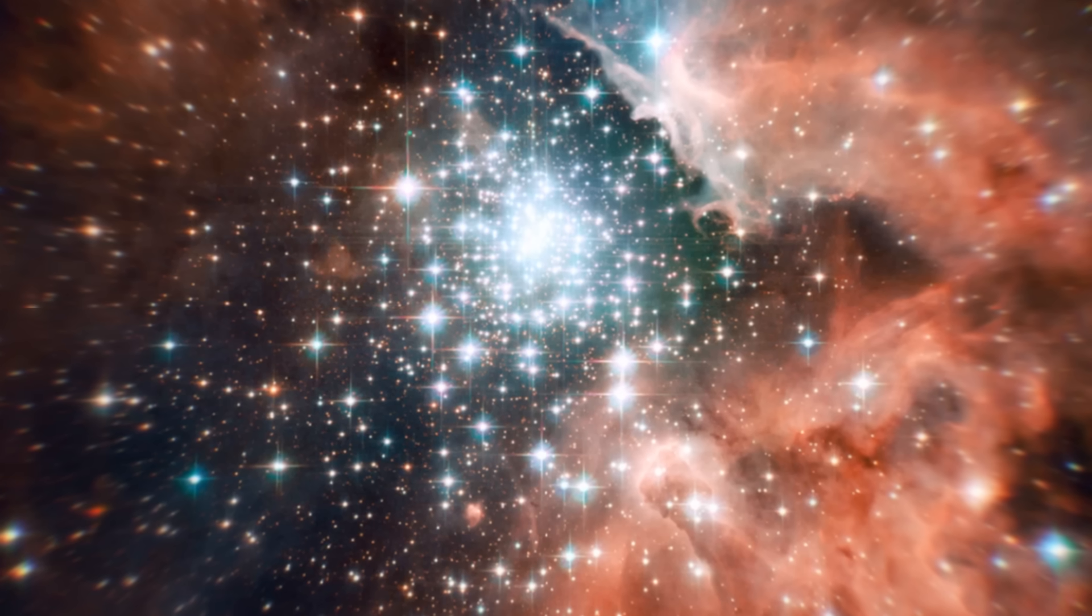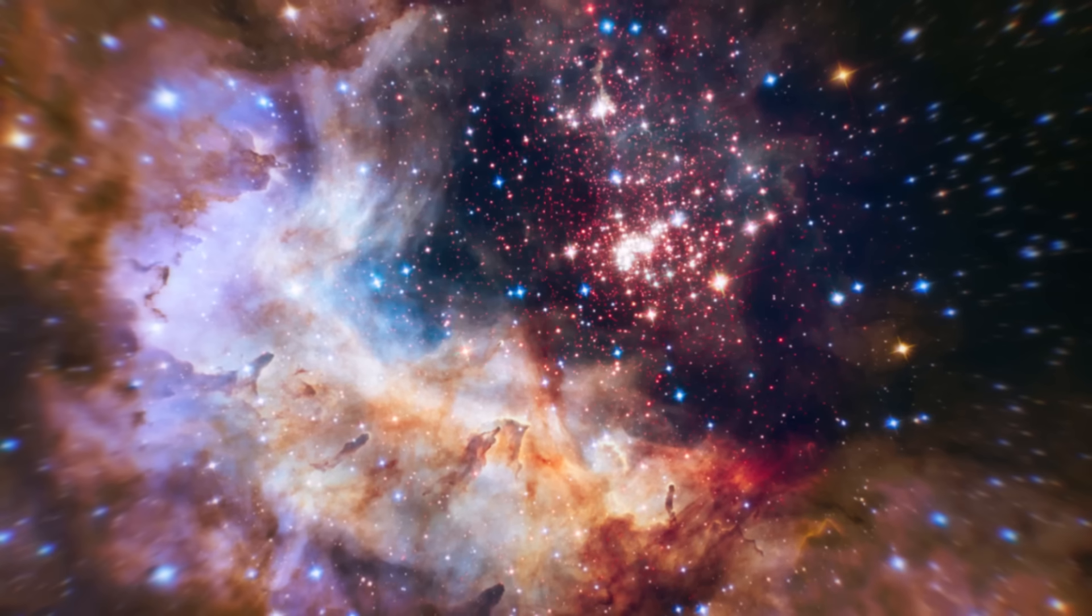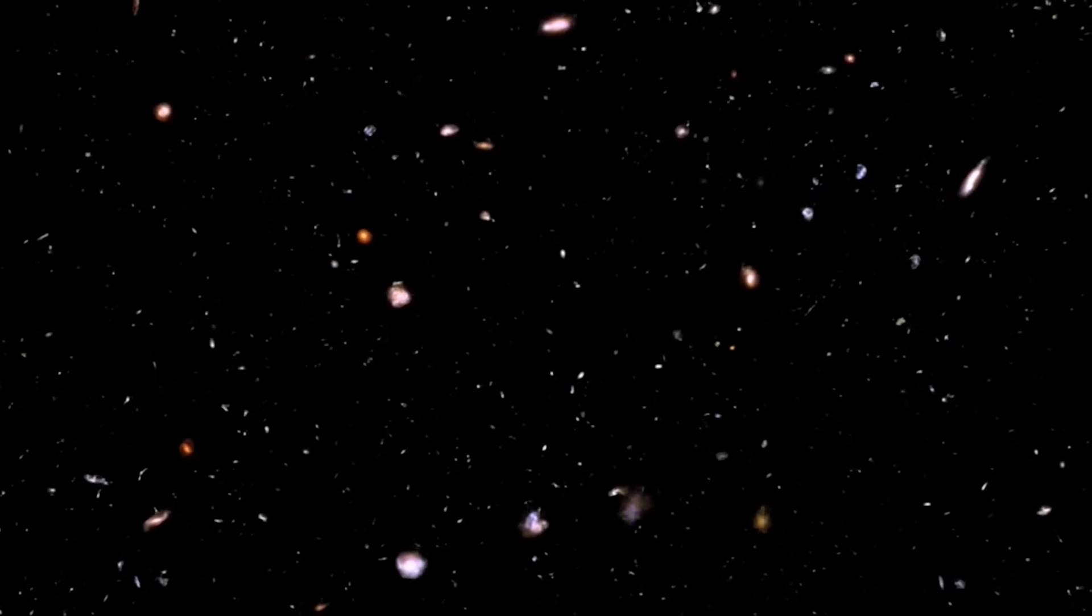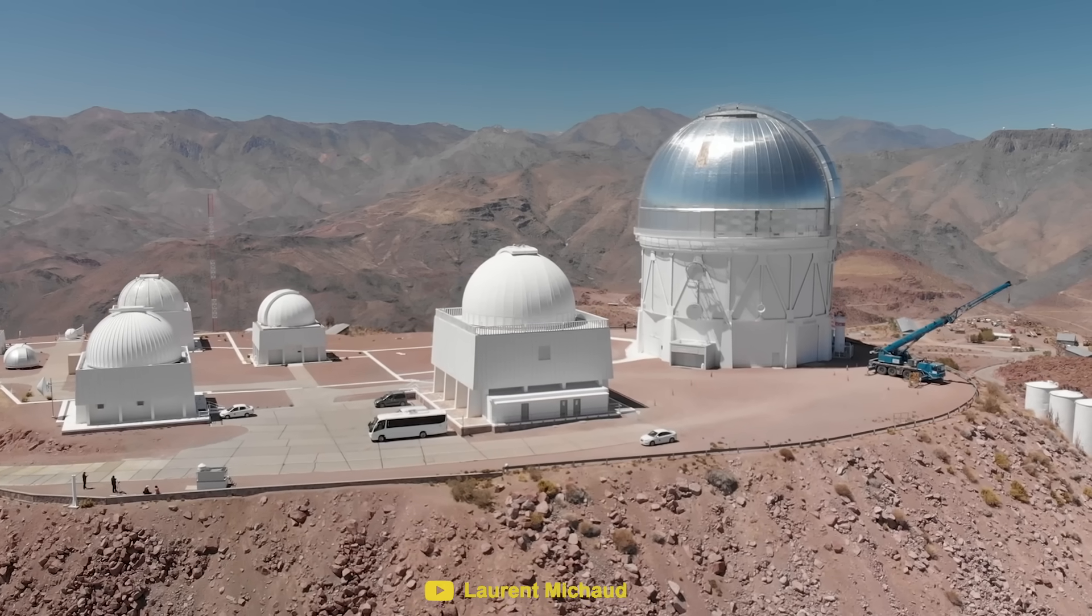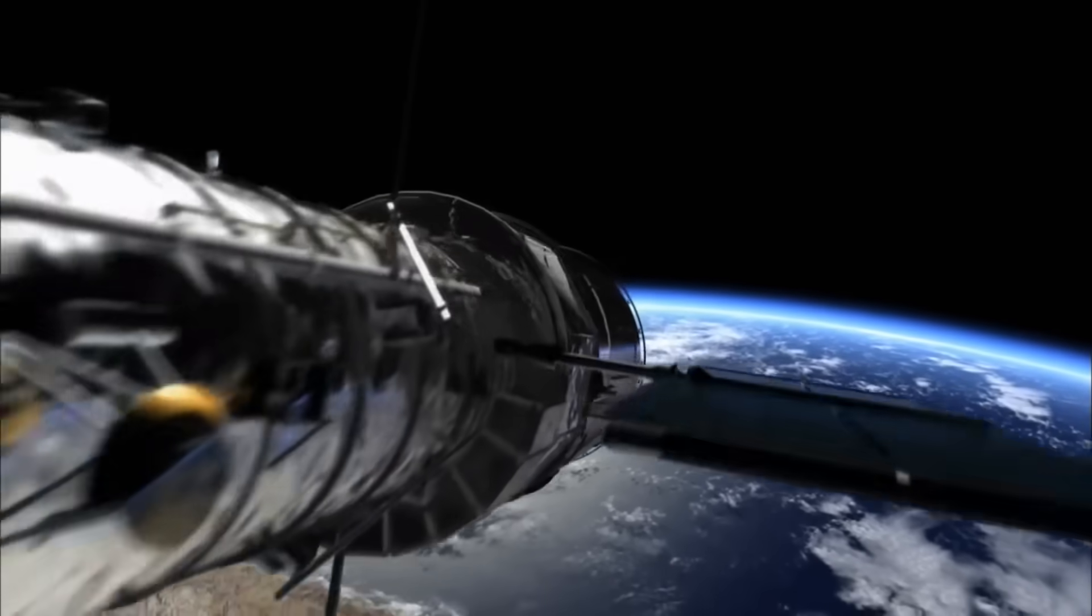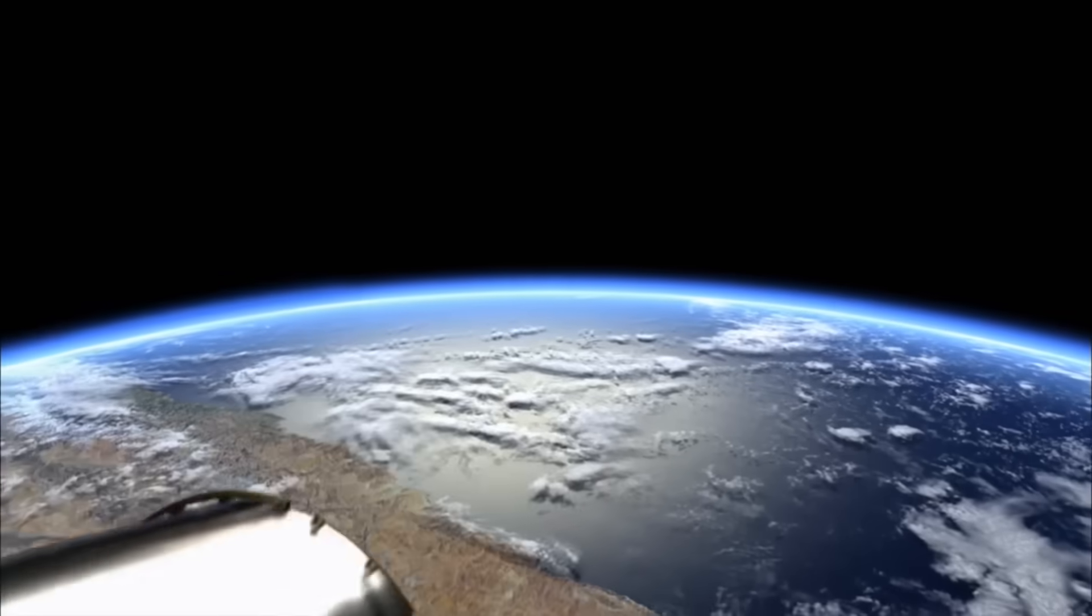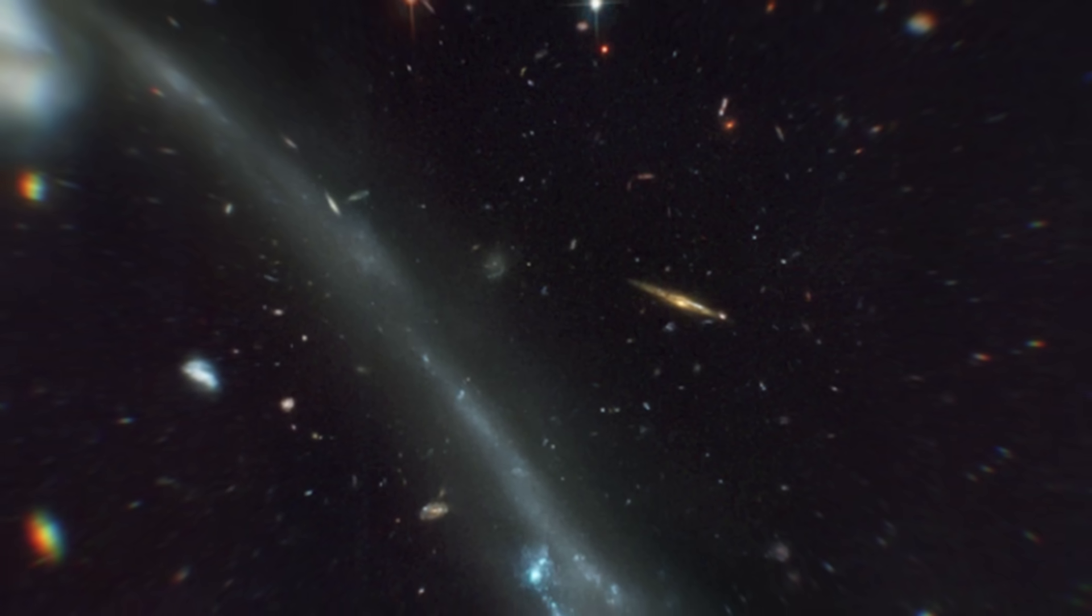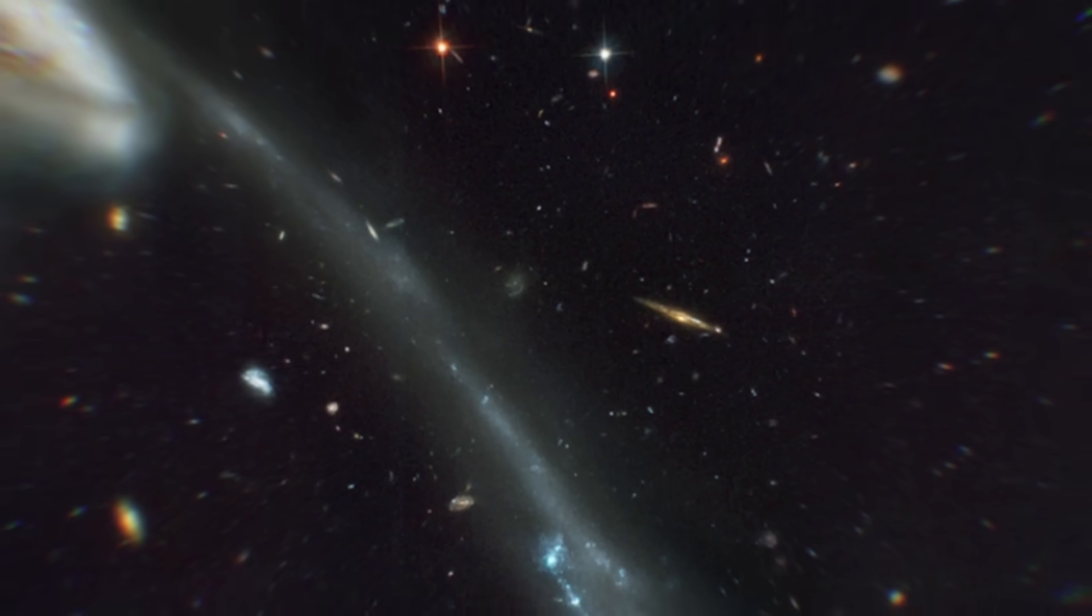Throughout its lifetime, Hubble has taken millions of amazing pictures. It's able to observe other parts of the electromagnetic spectrum that an ordinary telescope couldn't see. Since it's outside of Earth's atmosphere, it has an unobstructed view of the universe, which allows it to capture objects that are dimmer and much more distant than a ground-based telescope ever could.